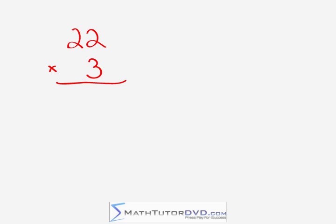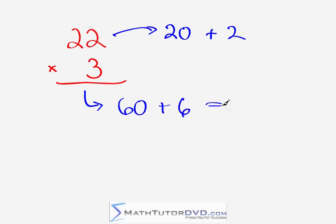Our next problem is 22 times 3. What we're going to do is realize again that 22 is really 20 plus 2. When we do this leading multiplication, 2 times 3 giving us 6, we actually have 60. 2 times 3 gives us 6. And I know that everyone here can add these together giving us 66.